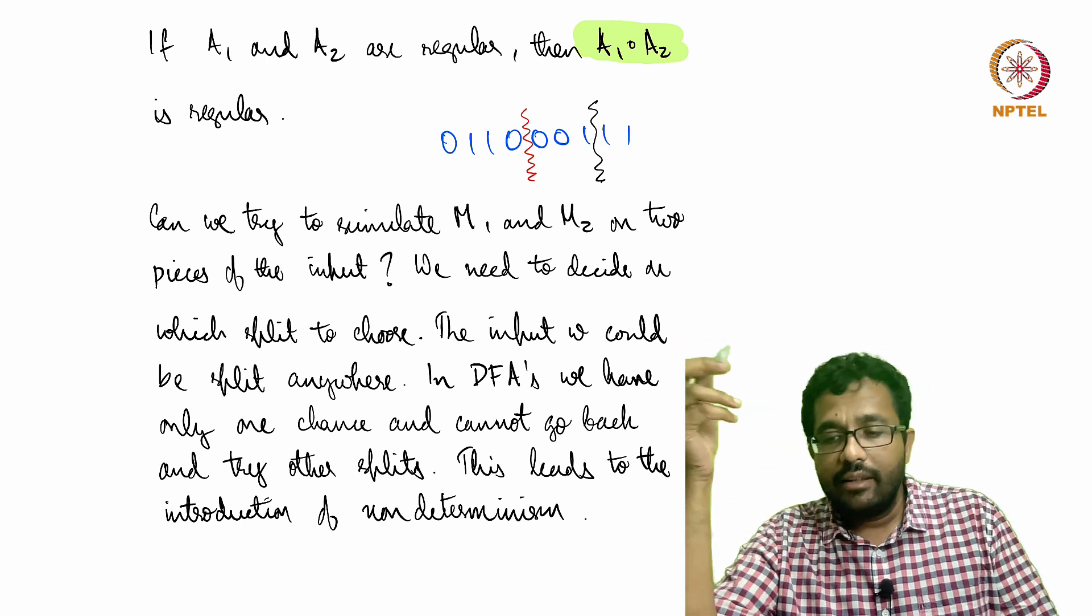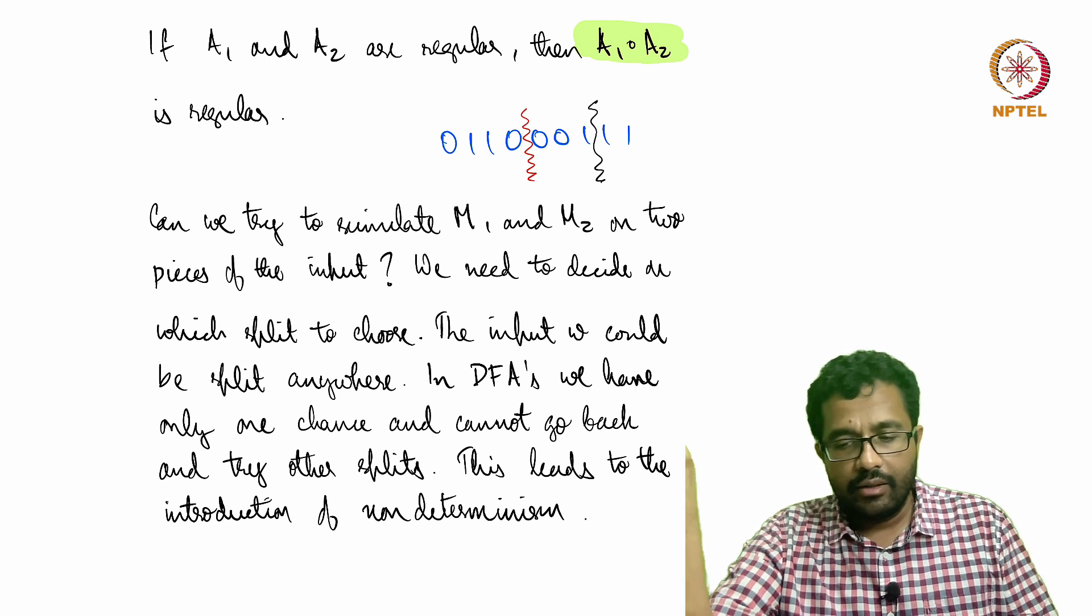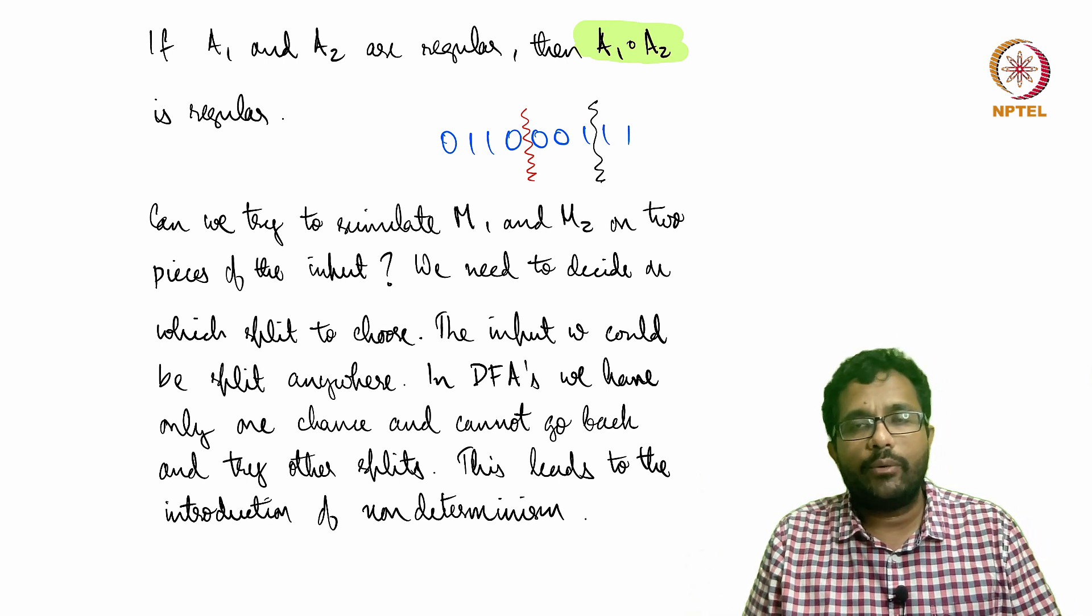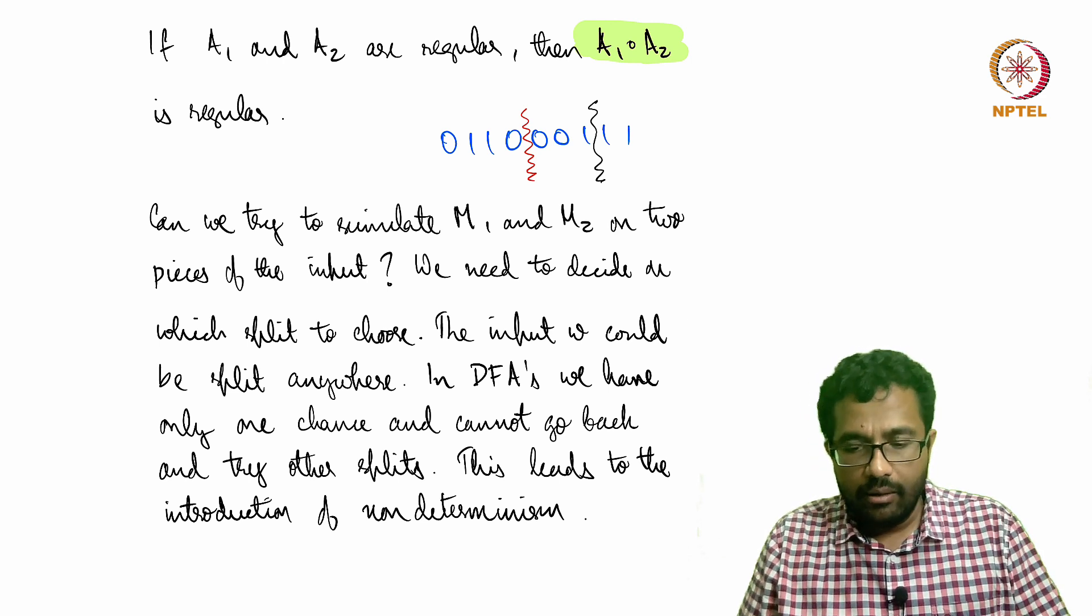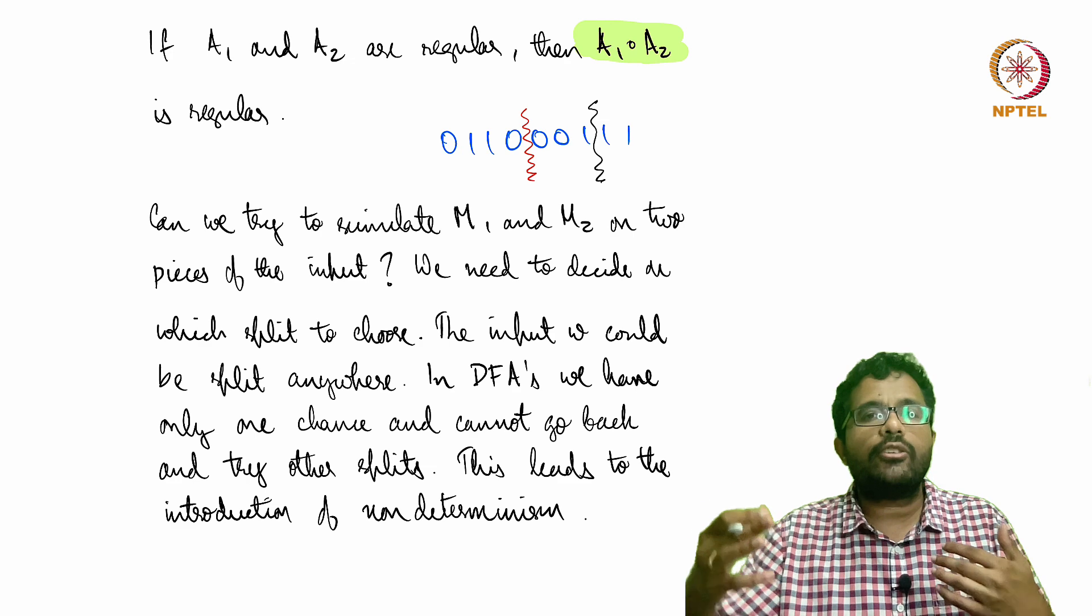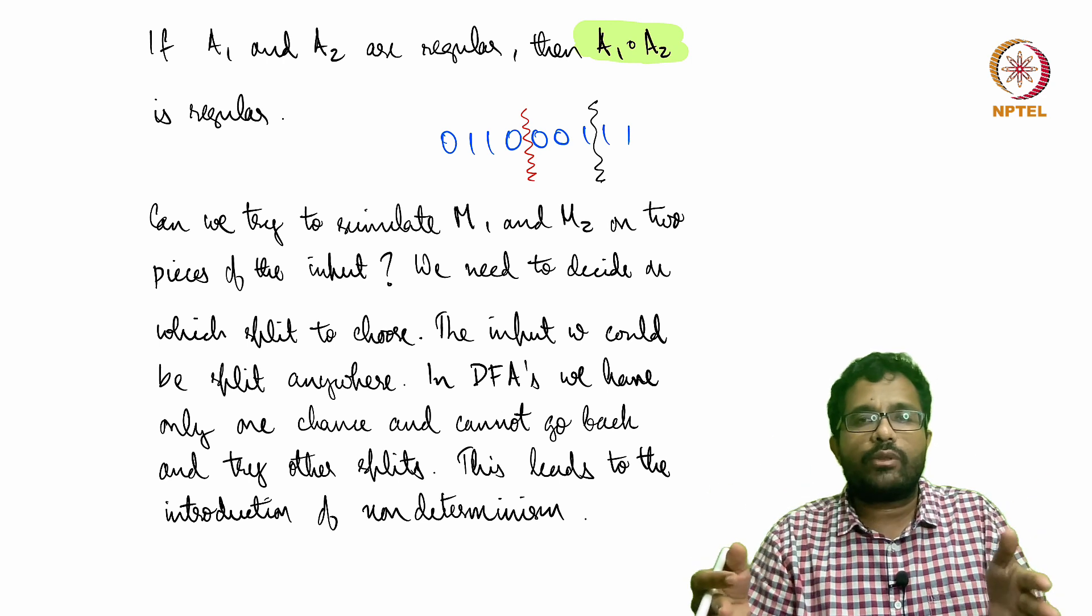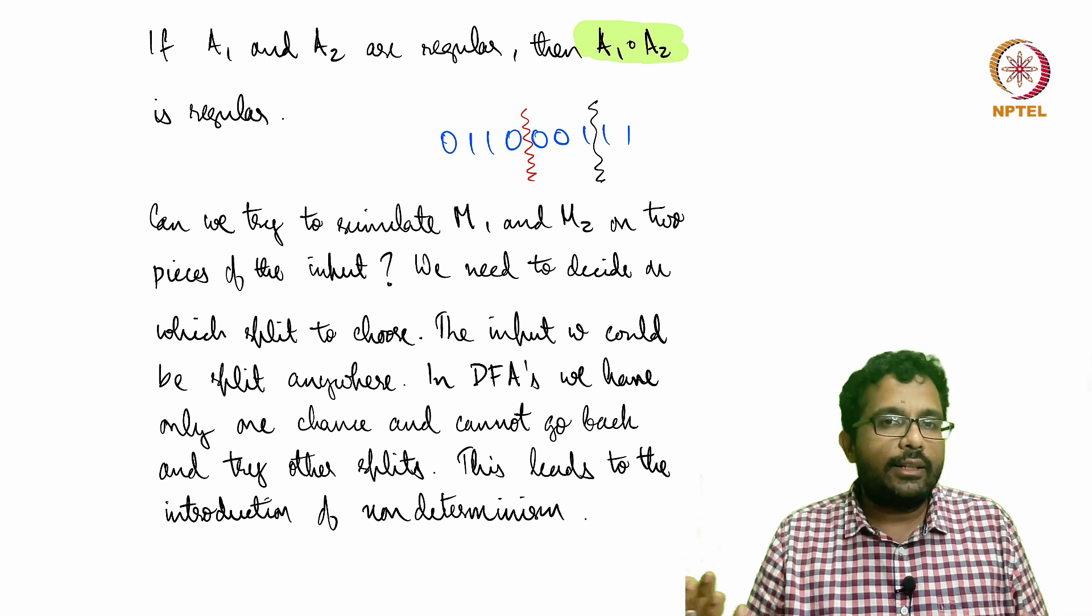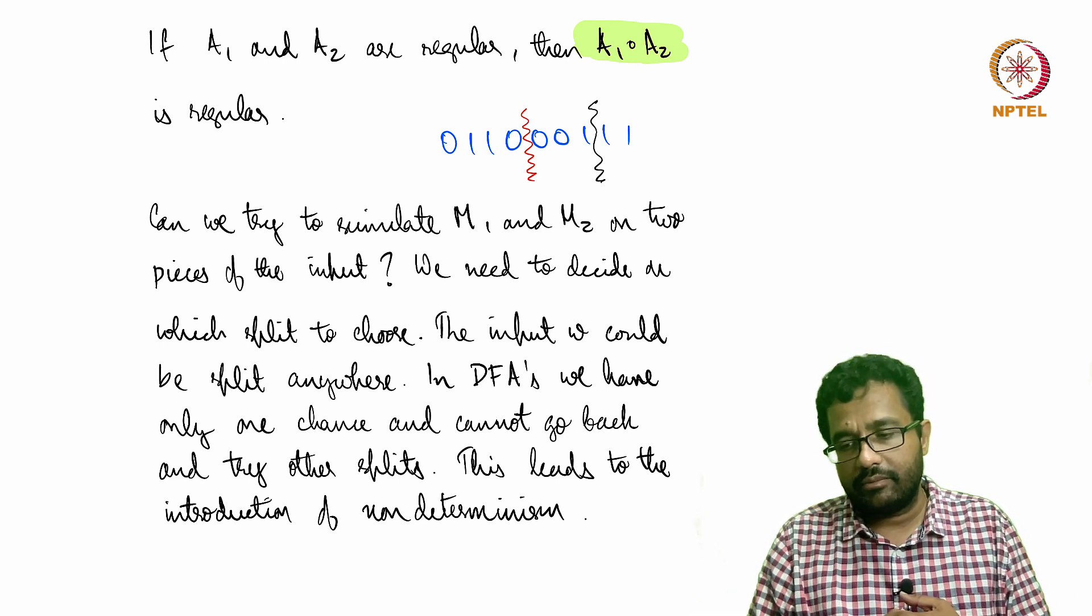We want a DFA that accepts all the concatenations. I am saying that 01100000111 is a concatenation of A1 and A2 because the first part is in A1—the first 0110 is in A1 and 00111 is in A2. But when you just give a string like this, then the combined machine M does not know where to split it. It does not know which prefix was from A1 and which suffix was from A2. And there is no way to encode that information also because it could be part of multiple such combinations.